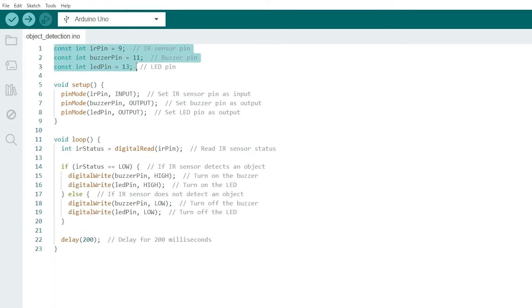You may change the pin numbers here according to your connections in your circuit. In the setup function, we have to set the pin modes for the input and output devices. Here the IR sensor is an input device. The buzzer and LED are output devices.